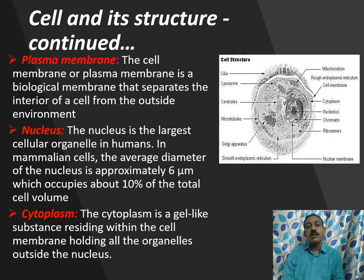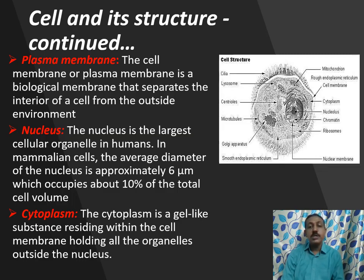The important parts of a cell are the plasma membrane, nucleus, and cytoplasm. The plasma membrane is a biological membrane which separates the interior and exterior of a cell from the outside environment. The nucleus is the largest cellular organelle; in mammals, the average diameter of the nucleus is approximately 6 micrometers, occupying about 10% of the total cell volume. The cytoplasm is a gel-like substance which resides within the cell membrane and holds all the organelles outside the nucleus.